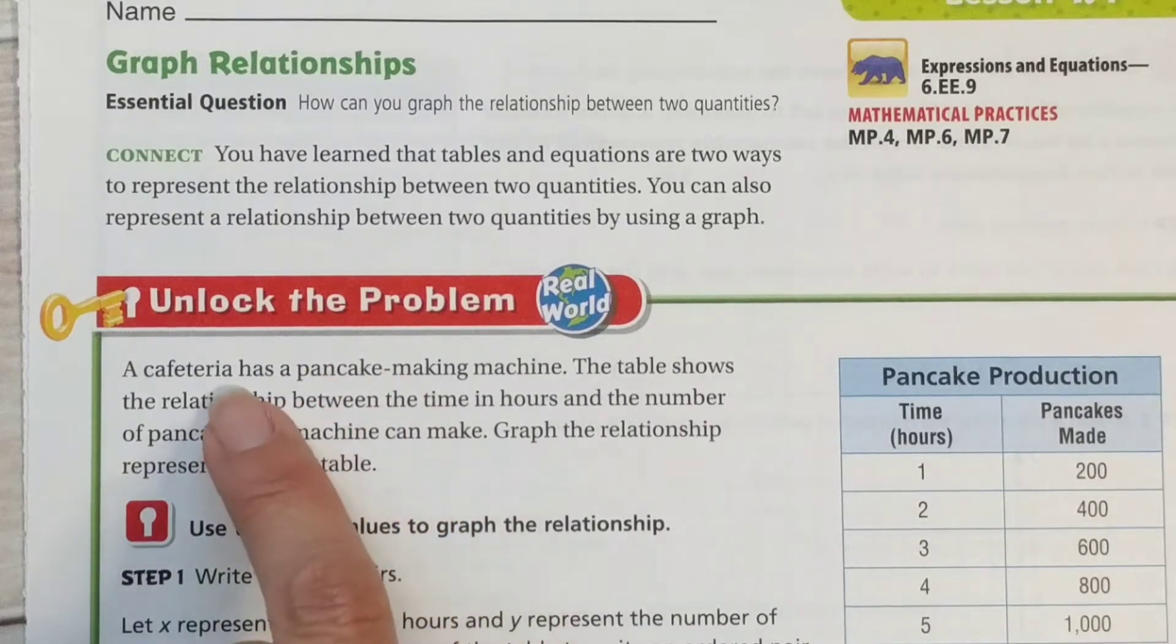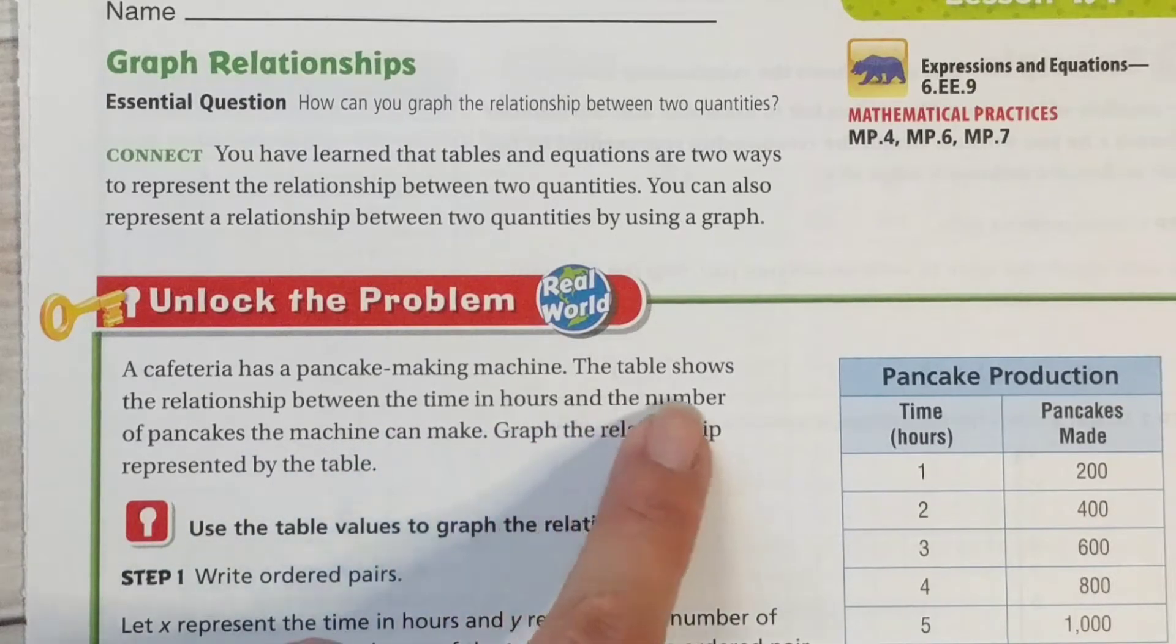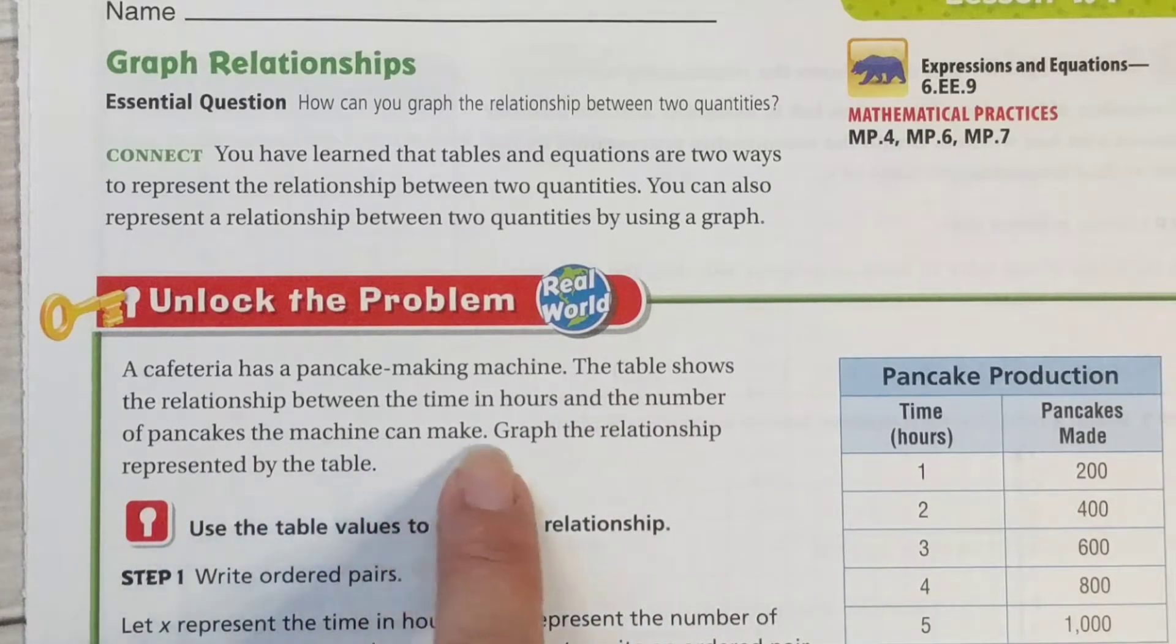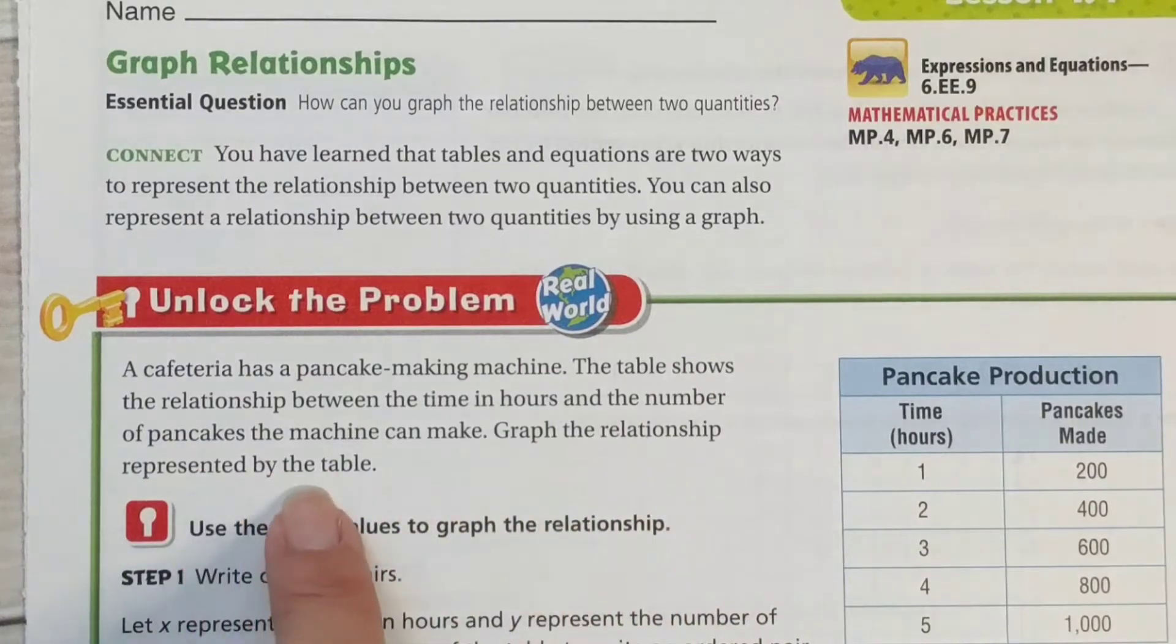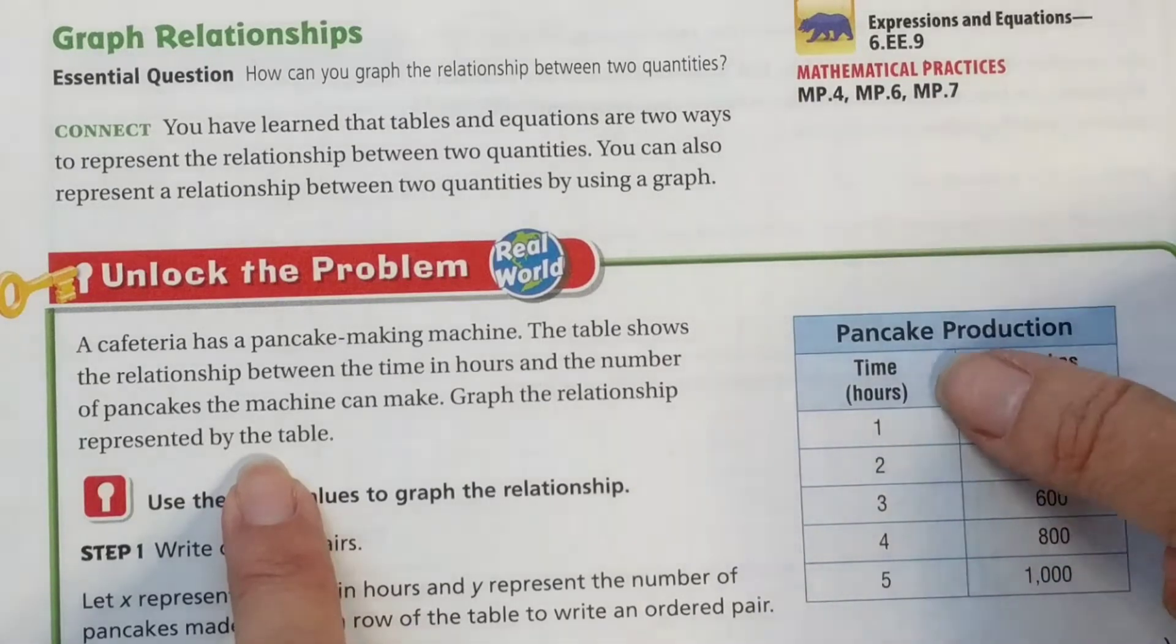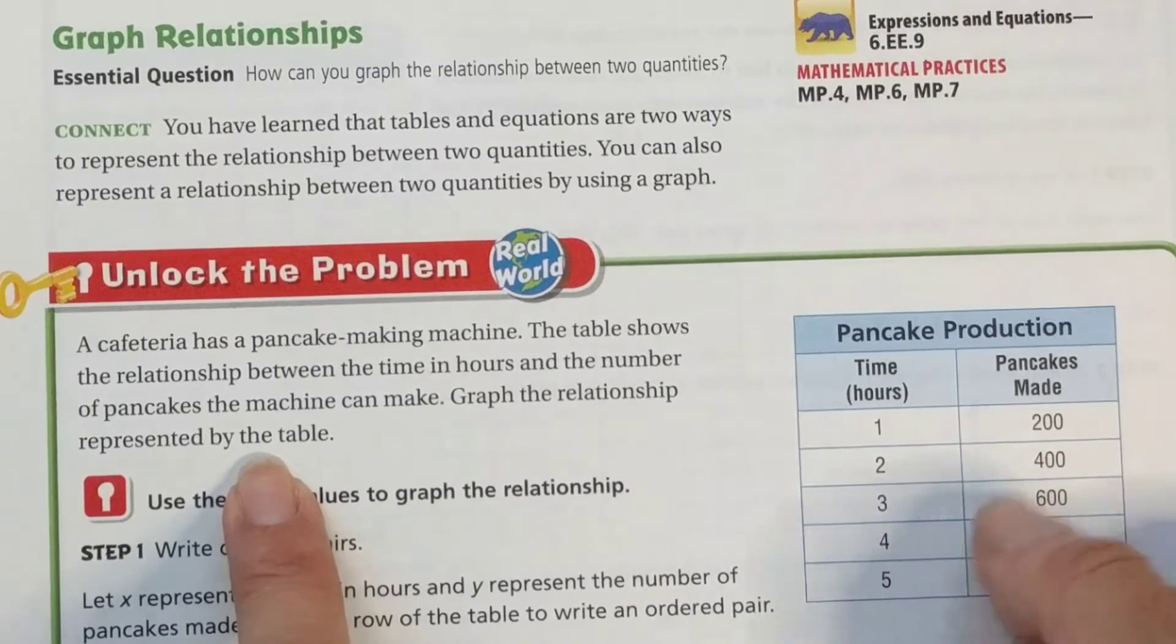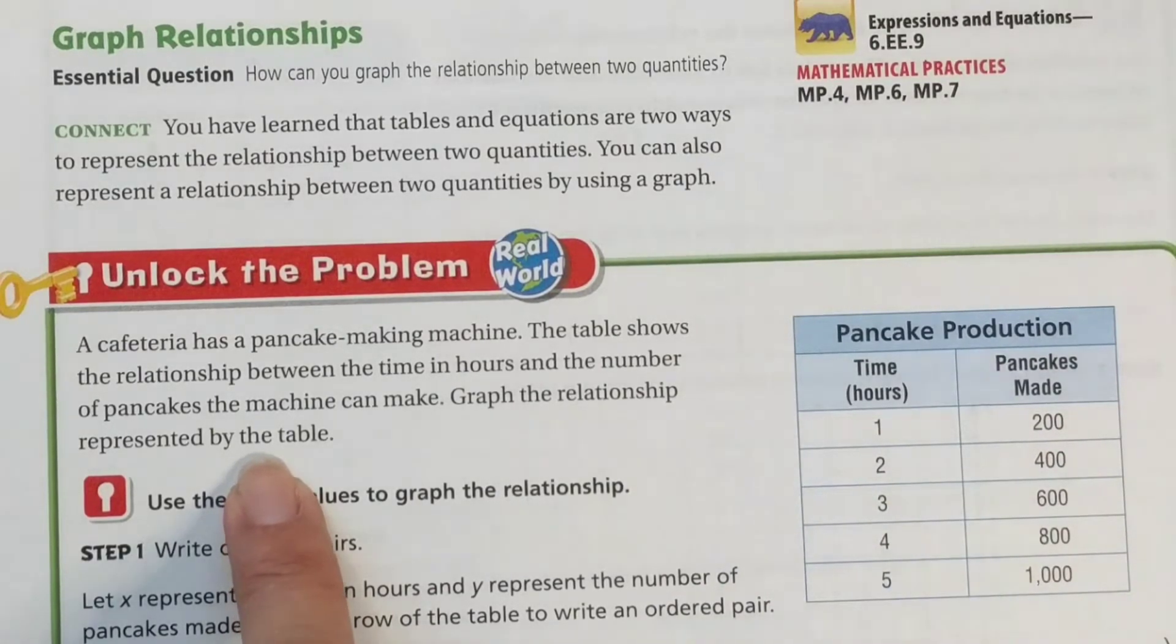Alright, unlock the problem. A cafeteria has a pancake-making machine. The table shows the relationship between the time in hours and the number of pancakes the machine can make. Graph the relationship represented by the table. So here's our table with all of our data. We have time and we have pancakes made. So in one hour they can make 200 pancakes. In two hours they can make 400 pancakes. By five hours they've made 1,000 pancakes. That's an awful lot of pancakes.